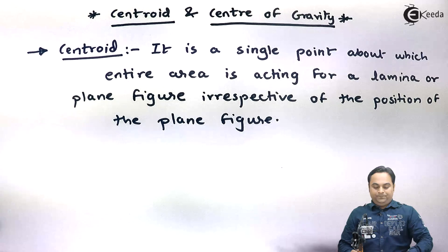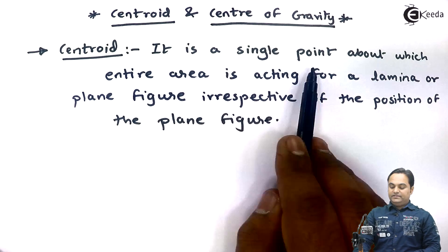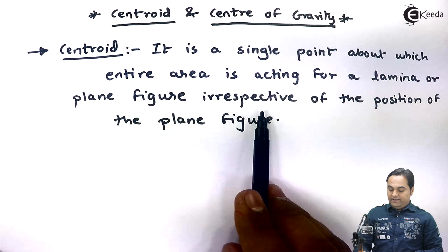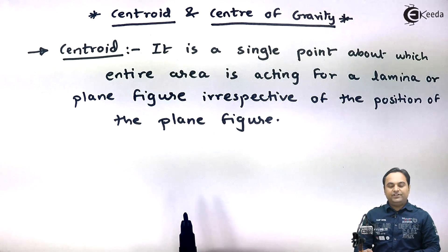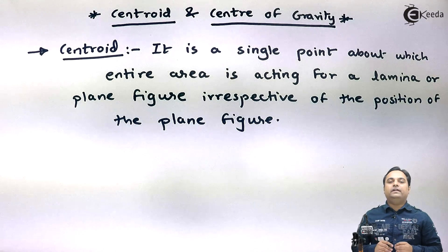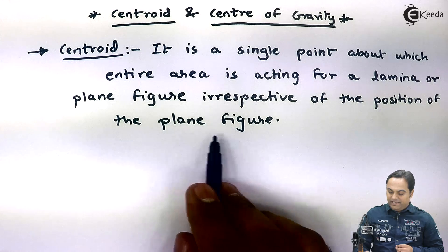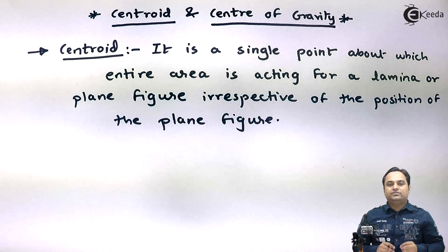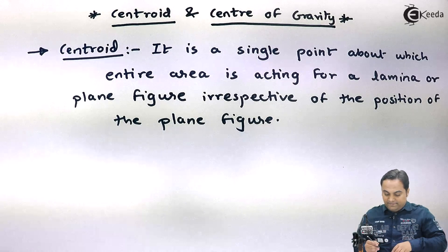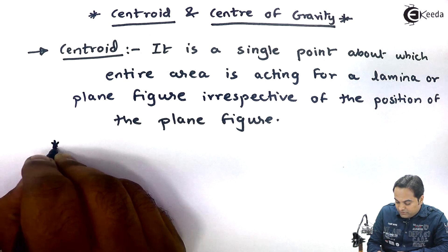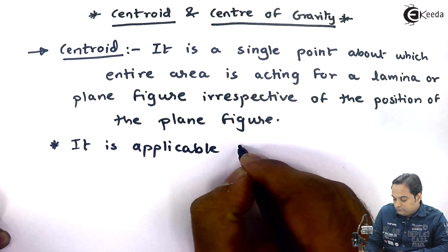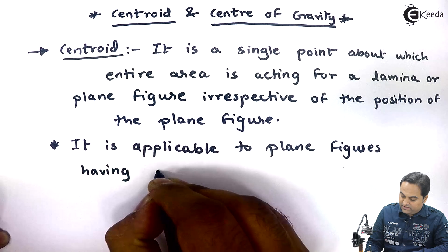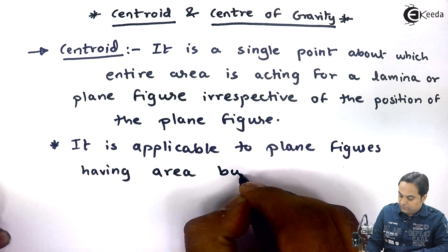Here I have written the definition of Centroid. By Centroid, we mean that it is a single point about which entire area is acting for a lamina or plane figure, irrespective of the position of the plane figure. From the definition, it is understood that Centroid is applicable only for plane figures, which means only 2D figures — no 3D figures. It is applicable to plane figures having area but no volume.